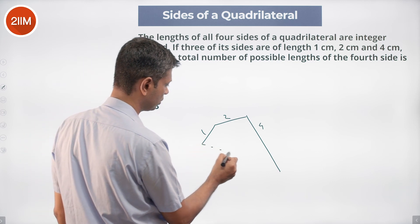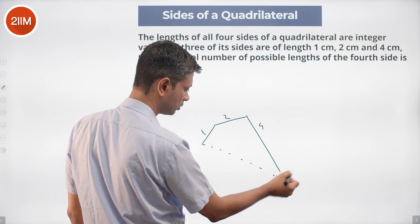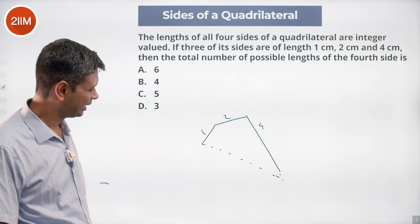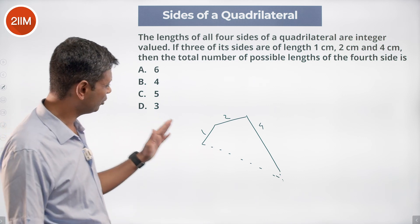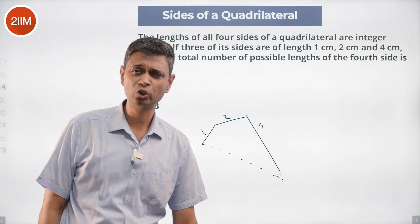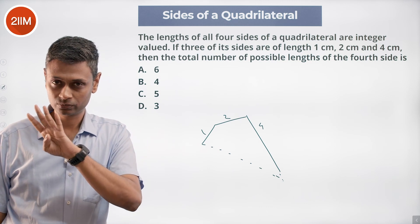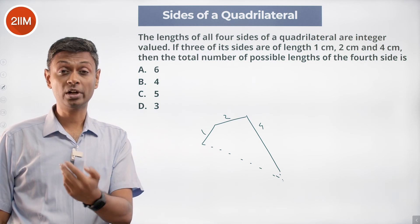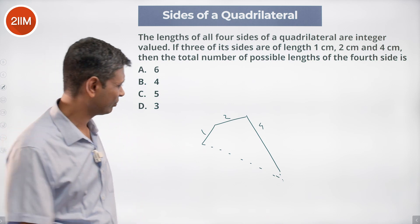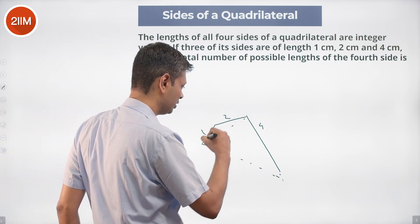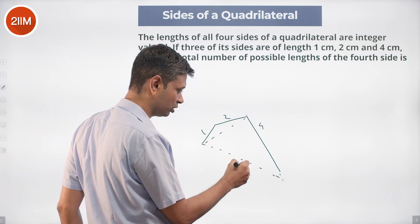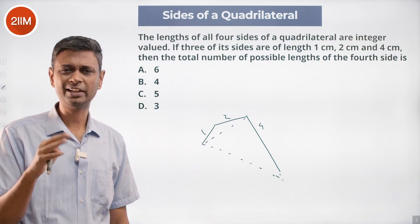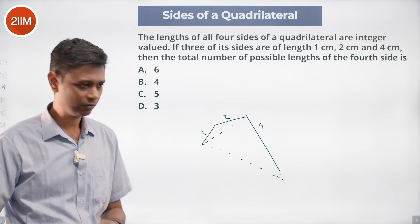Simple rule of thumb: the sum of any three sides of a quadrilateral has to be greater than the fourth. If I join two sides, these two are more than the other, this plus this is more than that, this plus this plus this is more than the remaining one. It's just the triangle inequality — sum of two sides greater than the third — extrapolated.